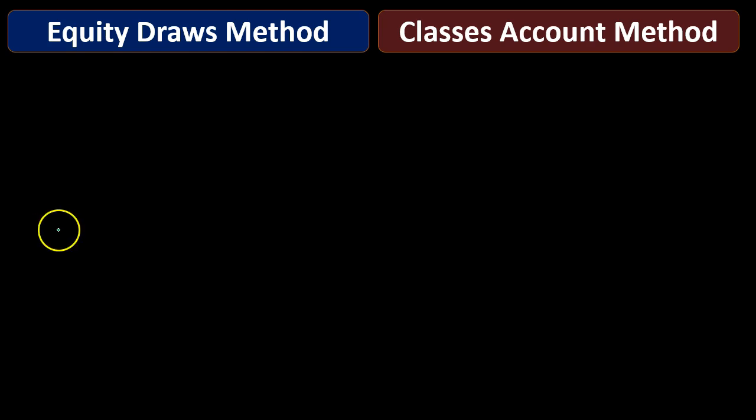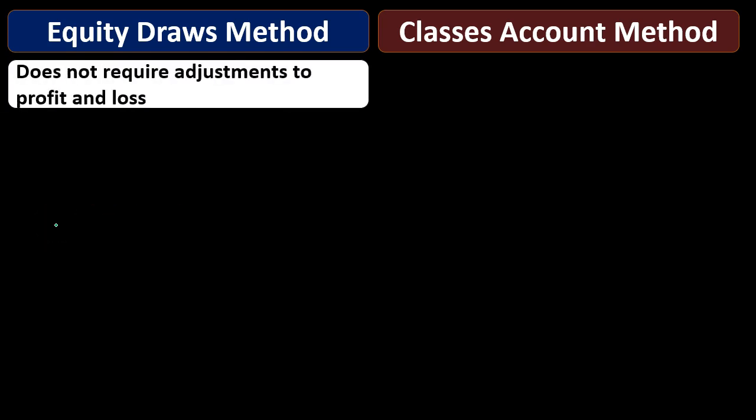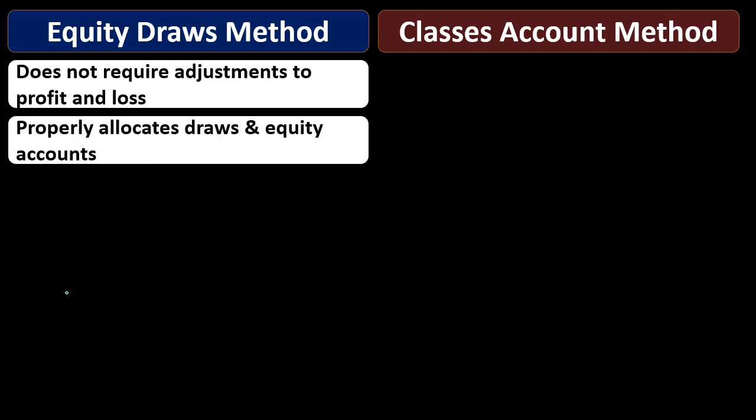Here we have the equity draws method. It does not require adjustment to profit and loss. The equity draw method doesn't affect the profit and loss for the business at all. We're not using classes and therefore we don't need to make any adjustments to the profit and loss, which is typically what we provide at the end of the year for tax preparation for the business side.